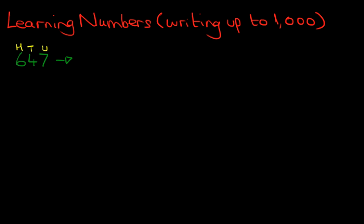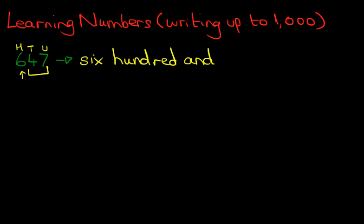So we've got the number 647. Let's start with this side here — 600. We know how to write that down: 600. And as we've said before, it's always good practice to write 'and'. So 600 and — the next part is easy — it's 47.